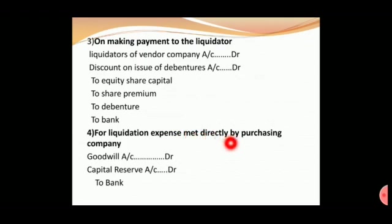For liquidation expenses met directly by the purchasing company: Goodwill Account debit, Capital Reserve Account debit, to Bank. These are the Transferee Company entries. So we have Vendor, Purchaser, Transferor, and Transferee companies. In total, the general entries are 12 entries — for Transferor Company and Transferee Company.